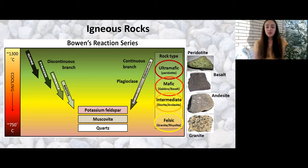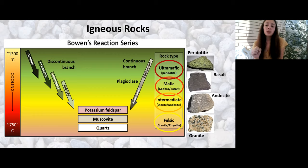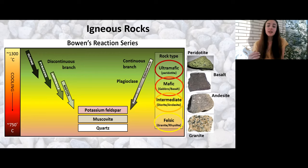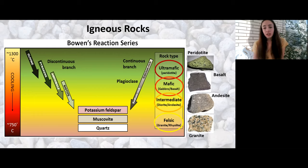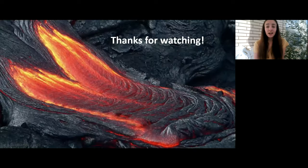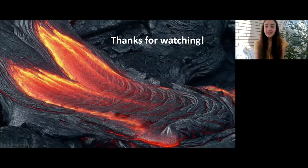That is it for this video. To review the main points: two main ways to distinguish igneous rocks are whether they're intrusive or extrusive, or whether they're mafic or felsic. The Bowen's Reaction Series defines the temperature at which certain minerals precipitate out of magma, and therefore also defines the temperature at which certain rock types form. These rocks are differentiated based on their silica content, as this has the most direct relationship to temperature. I hope you learned a lot about igneous rocks, and I'll see you next time for sedimentary rocks.